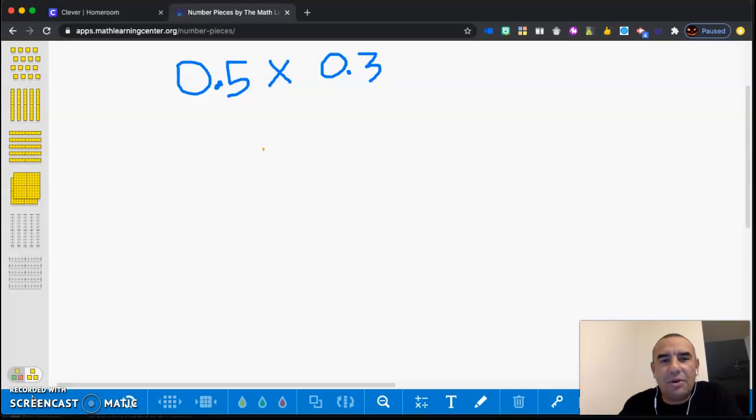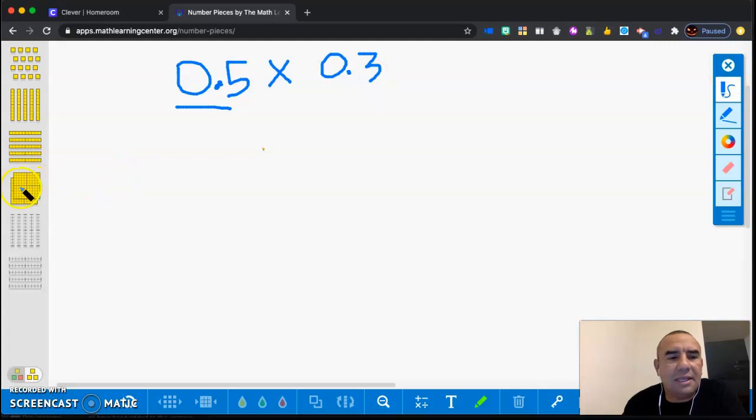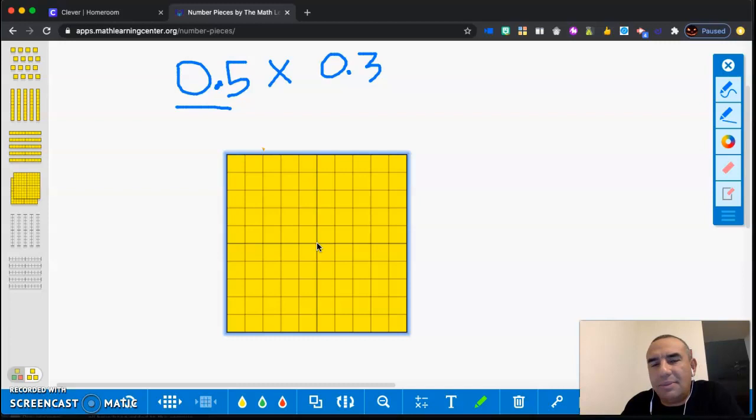You see that I told you before that the first factor tells you how many groups. Well, in this case, the group is not even complete. It's a decimal, right? So how do we represent it? That's the question. To answer that question, what we need first is one flat. That's going to be all we need to represent the multiplication.